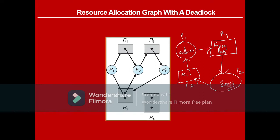Adam wants the frying pan, which is already with Amy. Amy wants the oil, which is already with Adam. Neither is ready to release their resource, so both will keep waiting indefinitely — Amy waits for oil, Adam waits for the frying pan. Adam is not giving oil to Amy, and Amy is not giving the frying pan to Adam. Both keep waiting for infinite time — this is a deadlock situation.